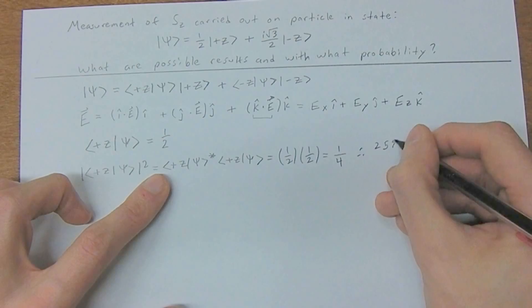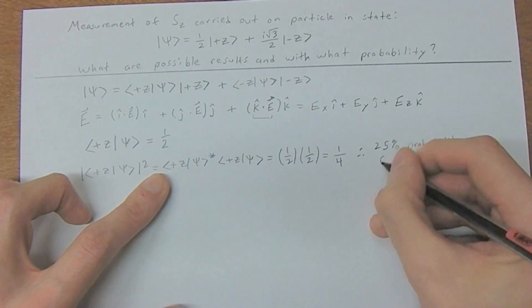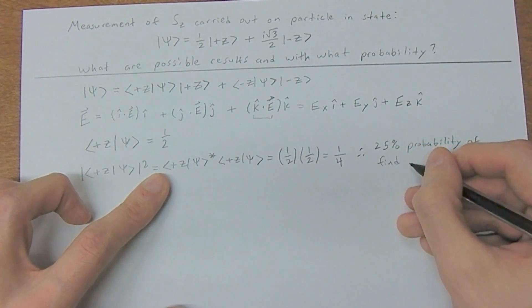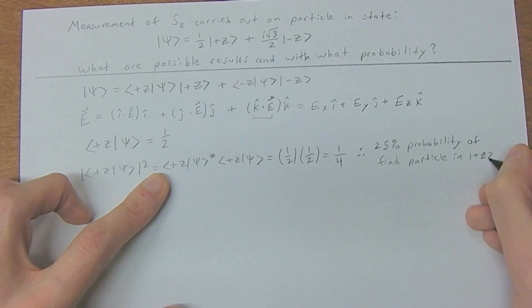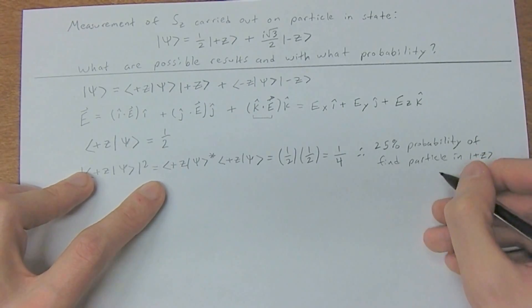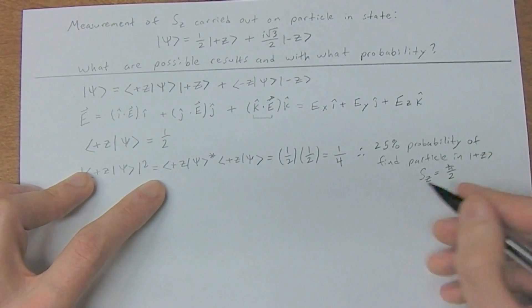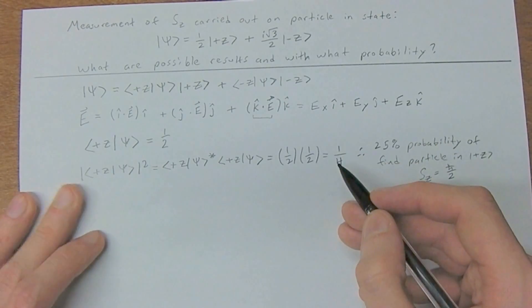Therefore, we have a 25% probability of finding our particle in the plus z basis. Now for the Stern-Gerlach experiment, the plus z basis is the same as saying that sz is going to be equal to h bar over two. That's actually the result of the experiment, but don't worry about that too much for now. Just getting used to this notation.